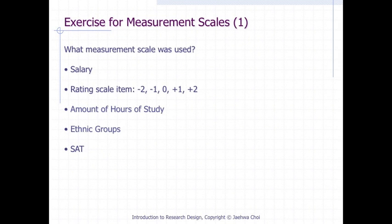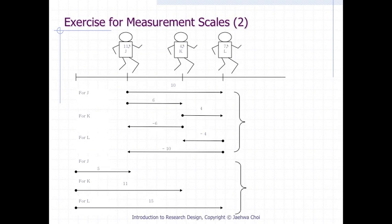Try to identify the appropriate types of measurement levels or measurement scale for the following examples: What is the measurement level for the back number of three runners? How about the distance between three runners? How about the distance of three runners from the starting point?